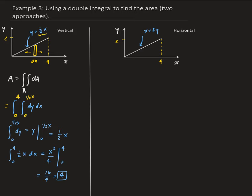Now let's do it the other way, using a horizontal piece going this way, which means this is going to be dy. So we want dy on the outside. Using the area formula — the double integral for area — we're going to have dx dy. Notice the function we have: it was originally y equals one-half x. So we have to find x in terms of y, because that's going to go on the outside this time.